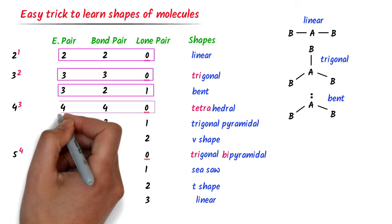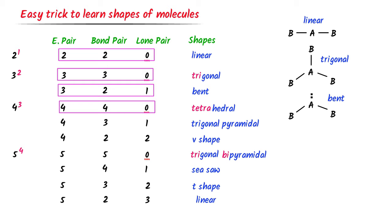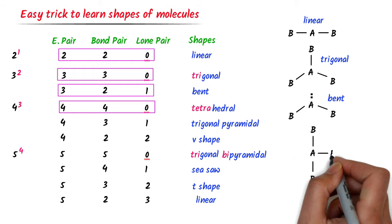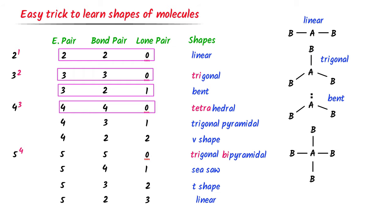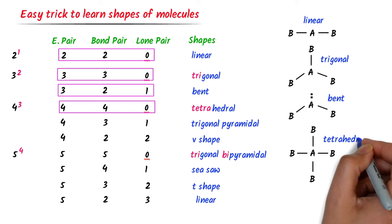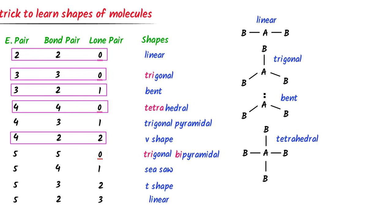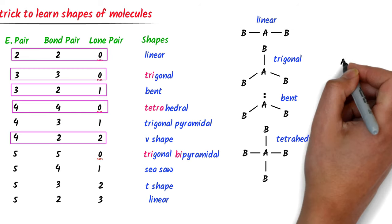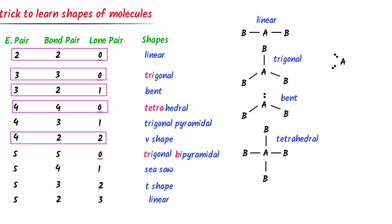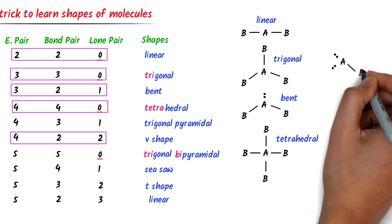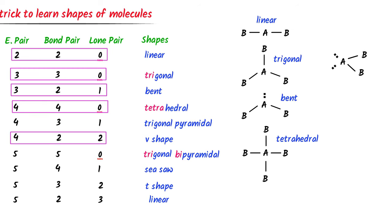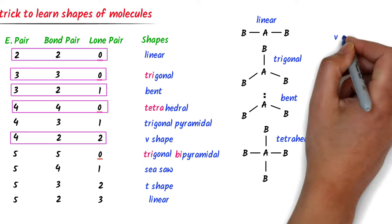Fourth case: central atom A with four bond pairs and zero lone pairs — its shape is tetrahedral. Fifth case: central atom A with two bond pairs and two lone pairs — its shape is V-shaped.